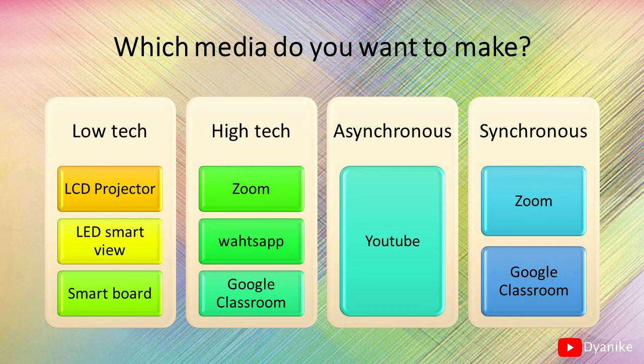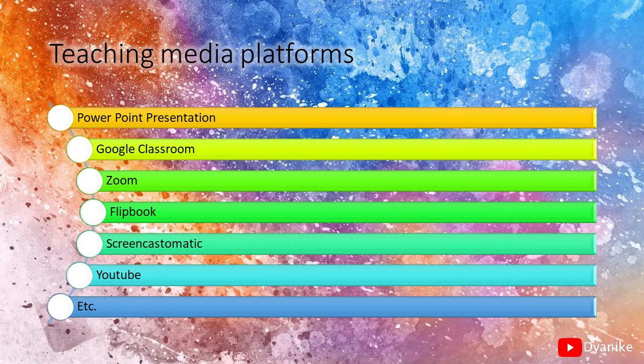When you consider based on the way of teaching and learning, we have asynchronous and synchronous media. In asynchronous media, it helps students have a teaching and learning process not in real time. Different from asynchronous, in synchronous media, students and teachers have teaching and learning at the same time — in real time — but they do it in online learning. You can use Zoom or Google Classroom for this.